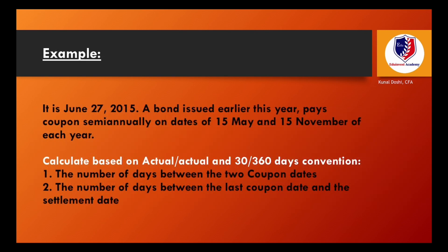Let's take up an example. Today it's June 27, 2015. A bond issued earlier this year pays coupons semi-annually on May 15 and November 15 of each year. We need to calculate, based on actual over actual and 30 over 360 convention: first, the number of days between the two coupon dates, and second, the number of days between the last coupon date and the settlement date.